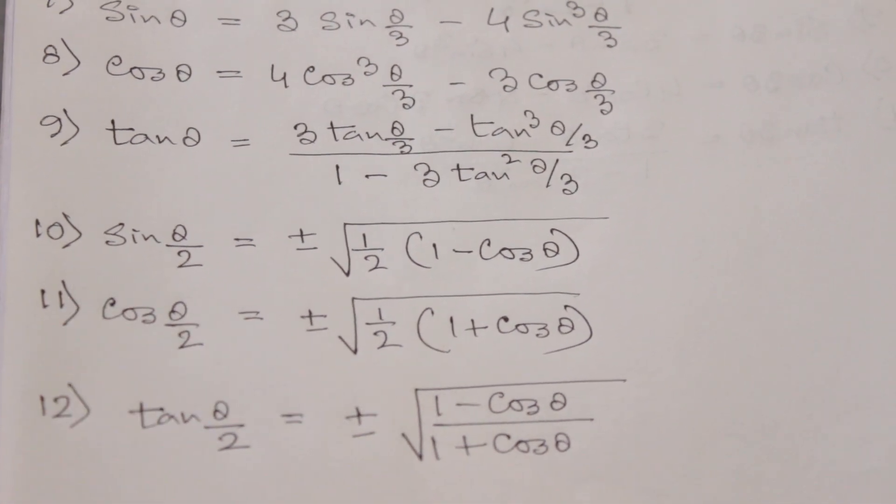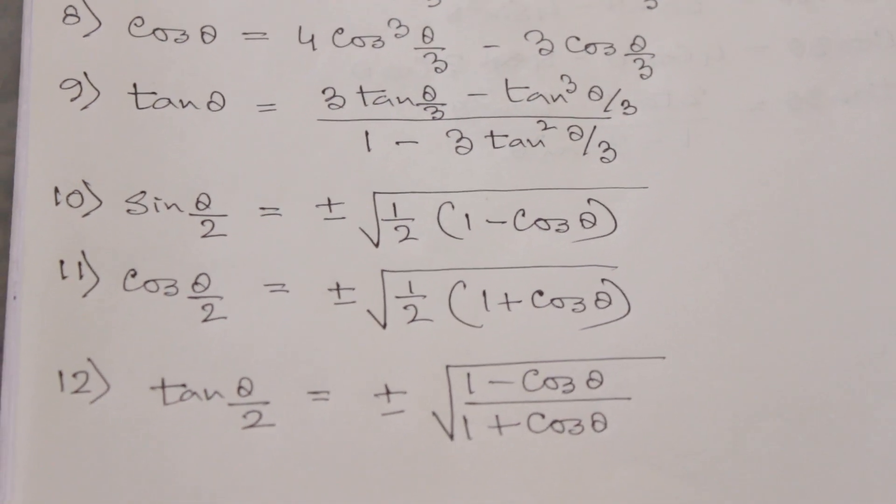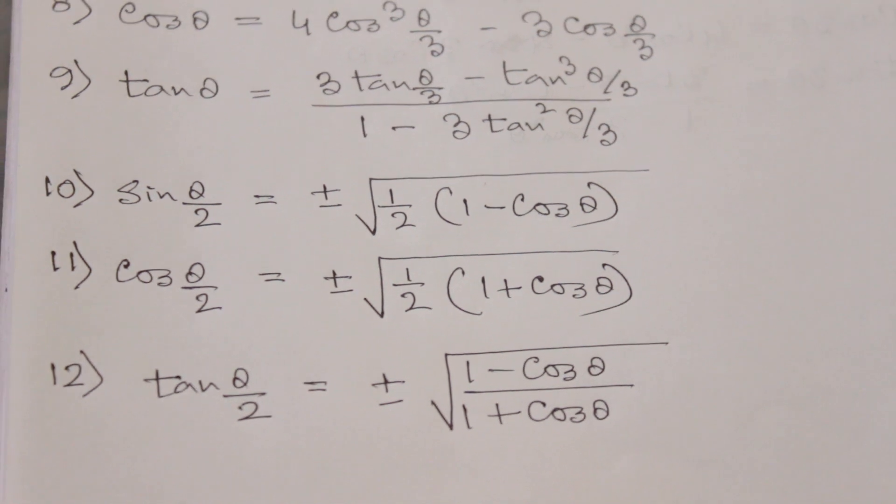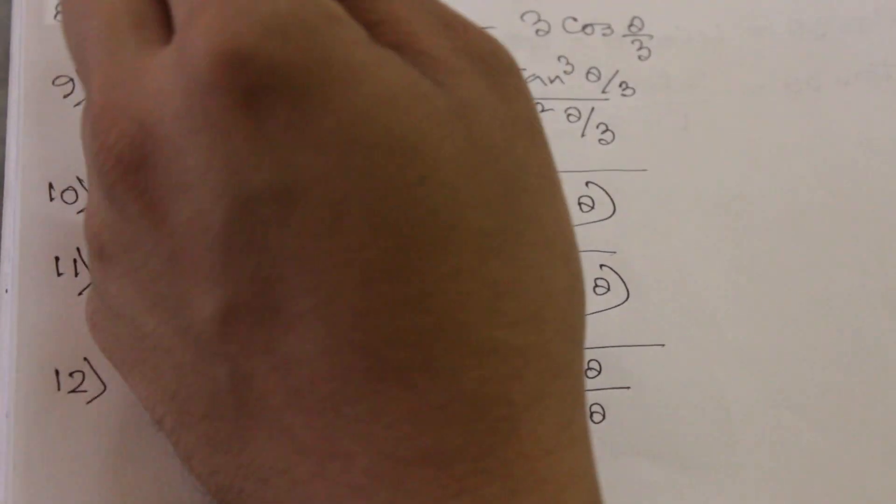Number 10: sin θ/2 which is equal to ±√(1/2(1 - cos θ)). This formula is derived from formula number 3.